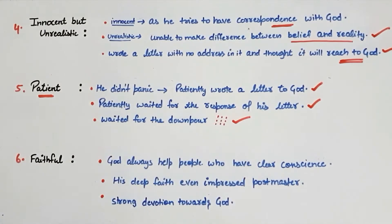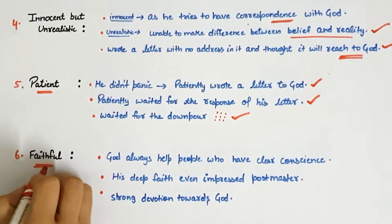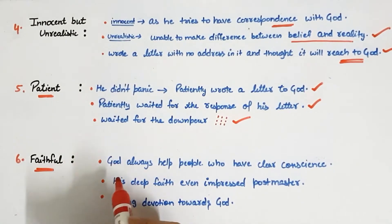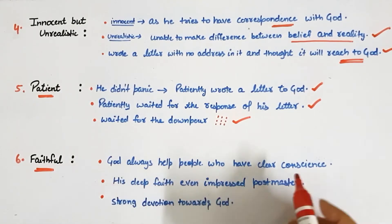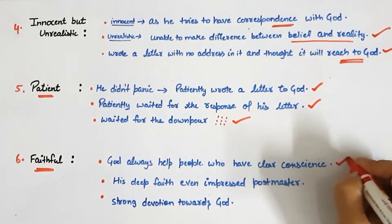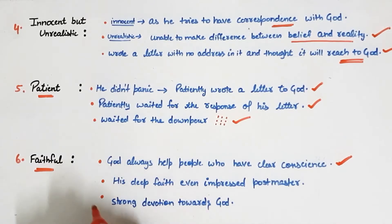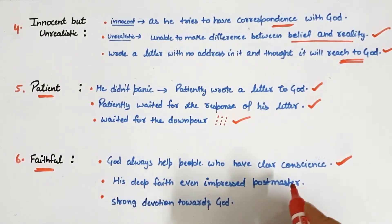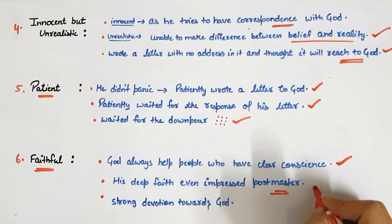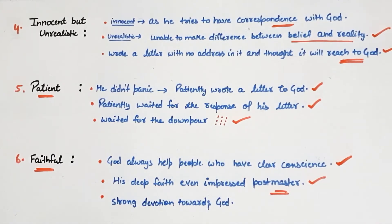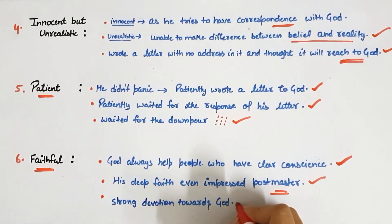Next is faithful — how was Lencho faithful towards God? He was sure that God always helps people with a clear conscience — this is a line from the chapter. Also, his deep faith even impressed the postmaster. The postmaster was very impressed by Lencho; in fact, he said that he had never seen such confidence as Lencho had in God. So Lencho had very strong devotion towards God.